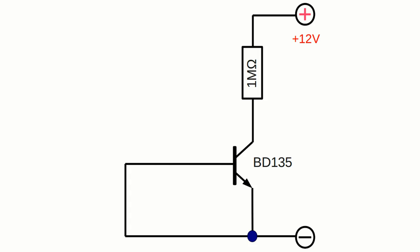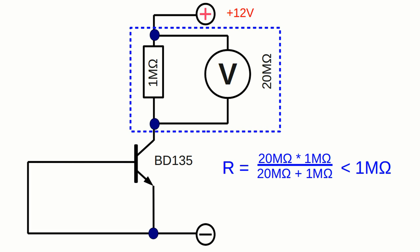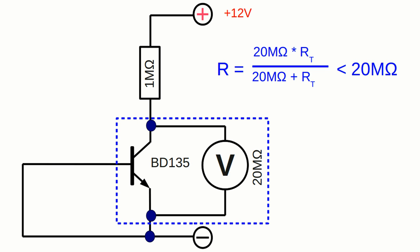Why does this happen? If you have watched my video about digital multimeters, you should remember the inner resistance of those devices. The multimeter used here has an internal resistance of 20 megaohm, which causes a clear shift of the resistance ratio at the voltage divider formed by the transistor and the load as soon as the device is connected to the circuit. Hence, the measured sum of the voltage drops does not equal the total voltage. The higher the resistance of the measured device, the higher the resulting measuring error.